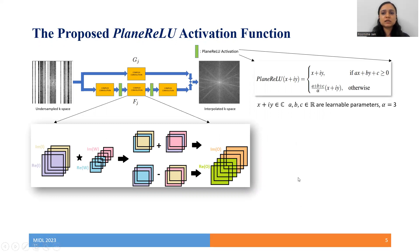For an input x + iy, the plane-ReLU fires the input as it is if ax + by + c is greater than or equal to 0; otherwise, it fires (a + b + c) / alpha times the input. Here a, b, and c are real learnable parameters of the neural network, and alpha is a real hyperparameter that we set to 3.